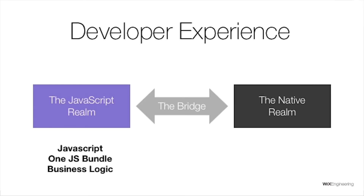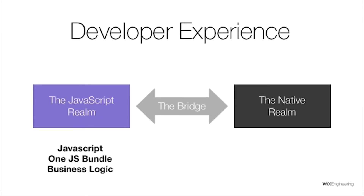What is the developer experience in each realm? In the JavaScript realm, you program in JavaScript and produce one huge JavaScript bundle — a text file containing all your JavaScript code, bundled together. This file is basically an asset inside your binary, just like an image, and the JavaScript engine runs it when the app executes. You put all your business logic on this side. In the native realm, you develop in Objective-C or Swift for iOS, or Java for Android, and produce an IPA or APK that you upload to the App Store or Google Play. React Native does most of the heavy lifting in the native realm for you.